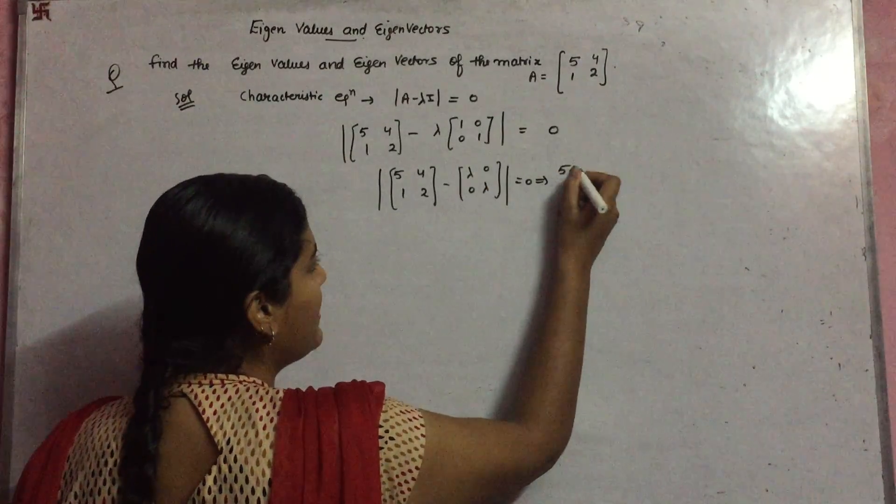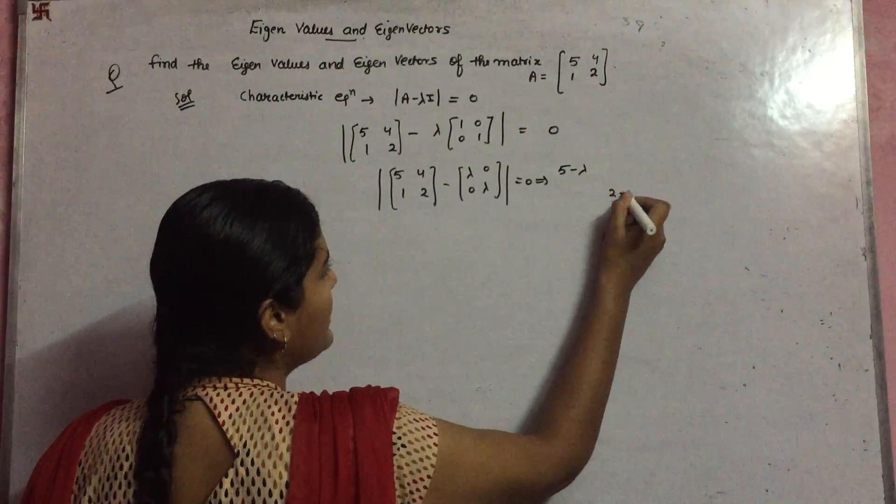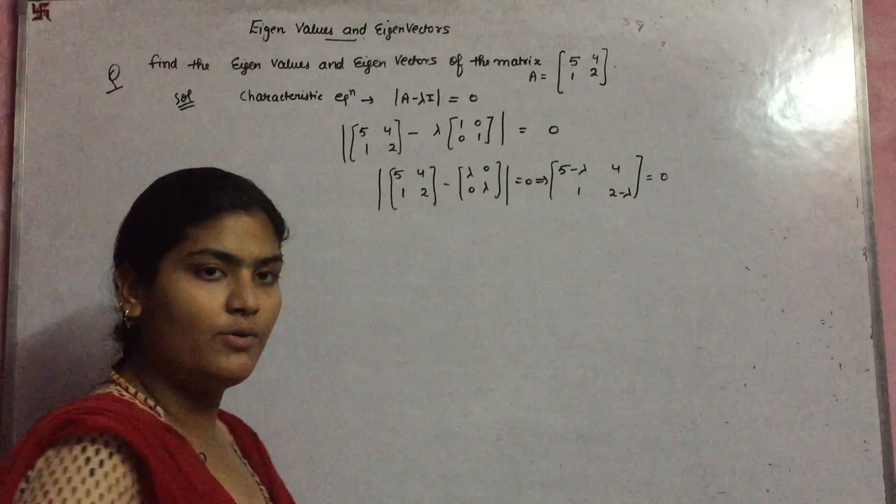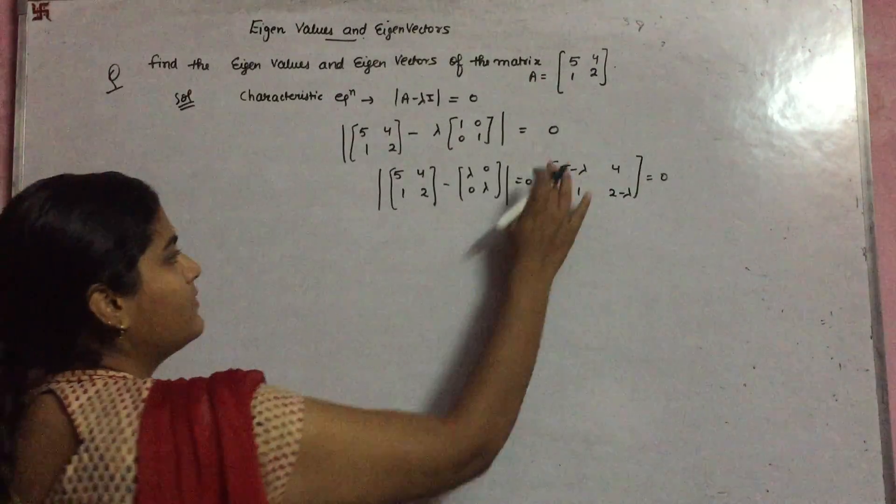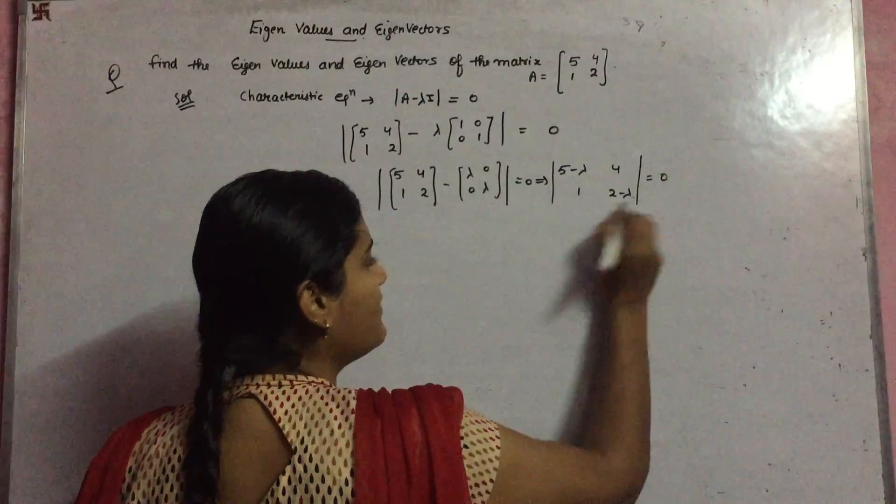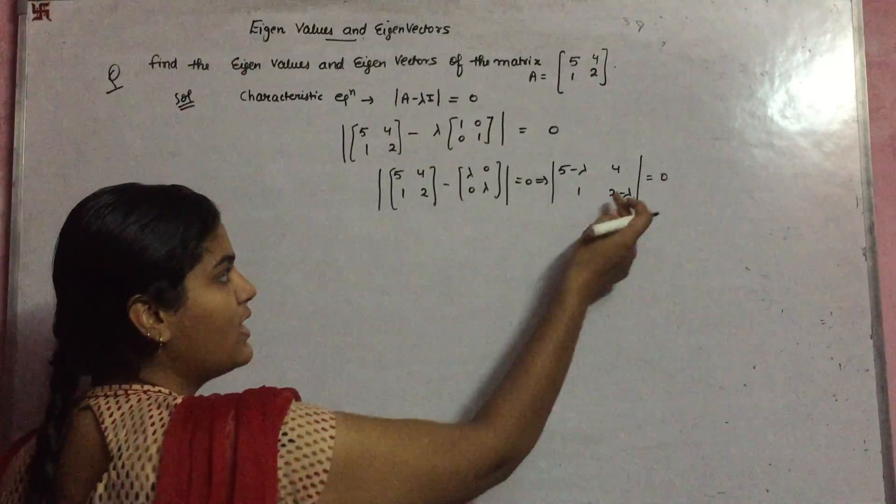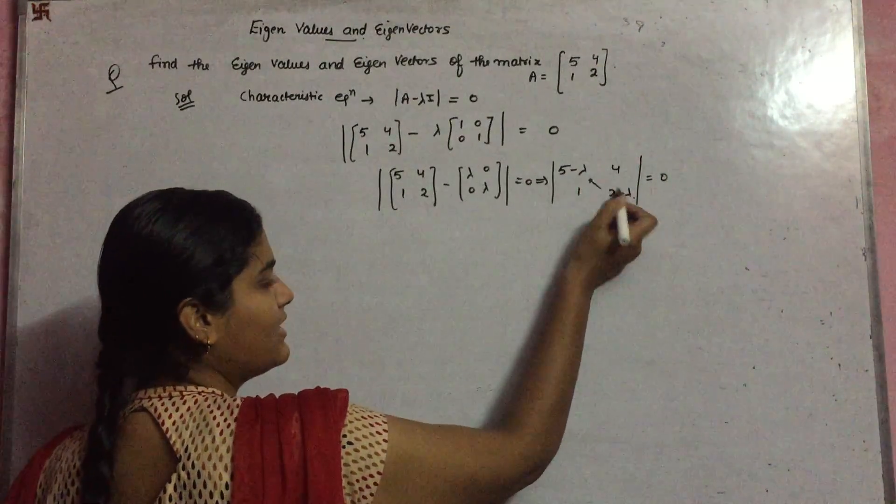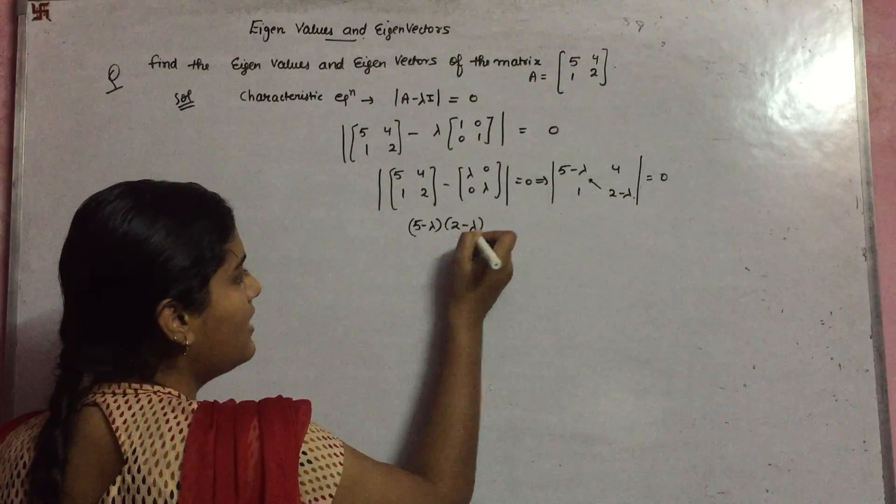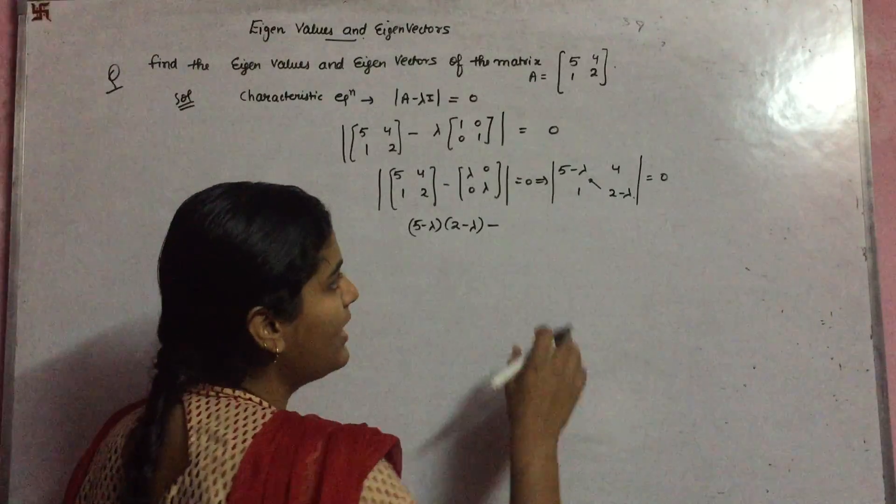Now evaluate: [[5,4],[1,2]] - [[λ,0],[0,λ]], this turns into [[5-λ, 4],[1, 2-λ]]. Now you have to evaluate the determinant of this matrix. How can you find it? Just cross multiply: (5-λ)(2-λ) minus 4.